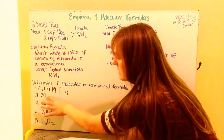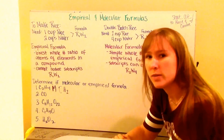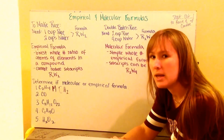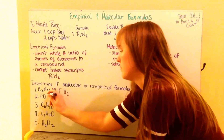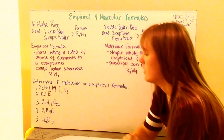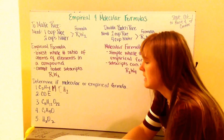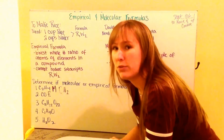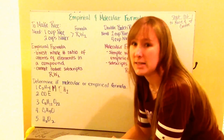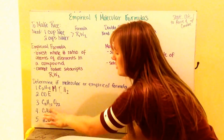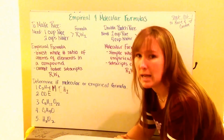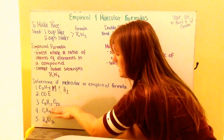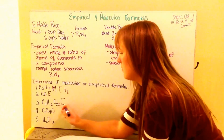Carbon monoxide, CO, has two subscripts of one that we don't write, so here it would be an empirical formula. My next example, C11H12O22, starts off looking like it could be molecular, but in fact it's empirical, because 11, 12, and 22 do not have any common denominators. So therefore, this stays as it is and is again empirical.